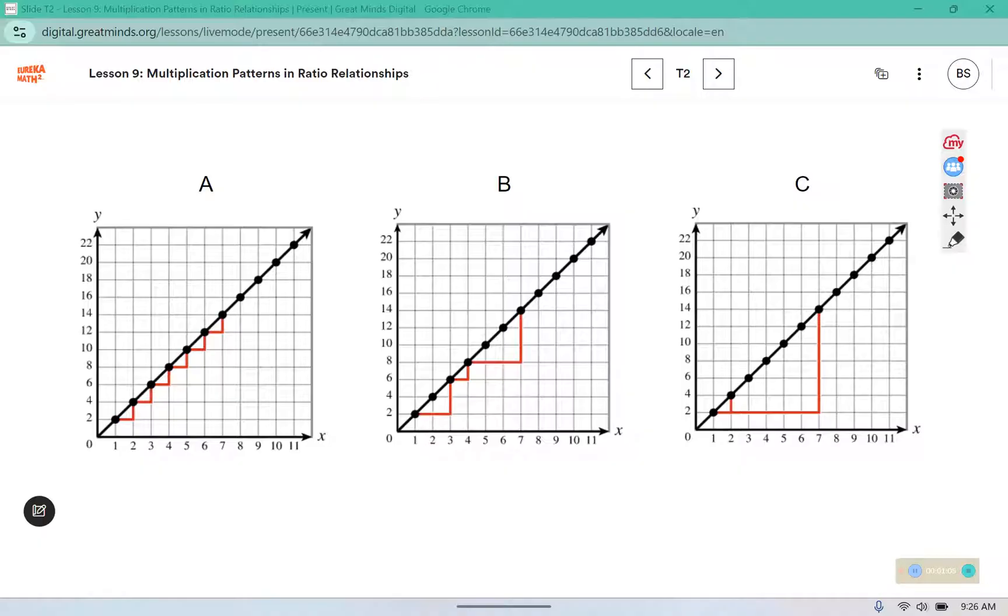You might see that graph A has that same addition pattern we saw yesterday, where we're adding 1 to the x values and 2 to the y values. Over here on graph B you can see there are different size addition pieces. They're adding 2 and 4, and then 1 and 2.